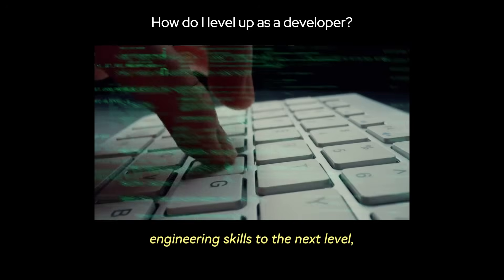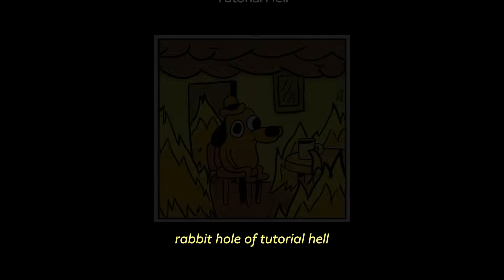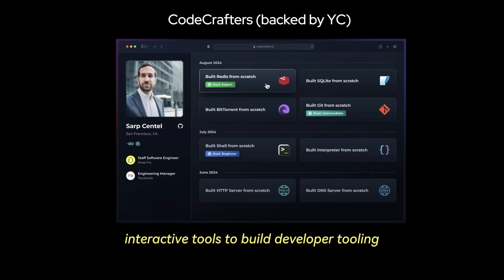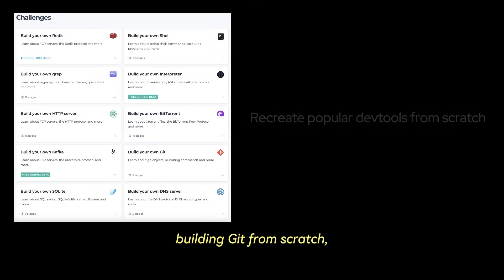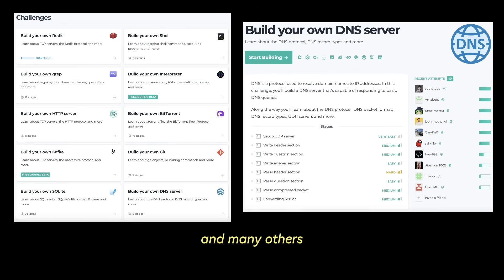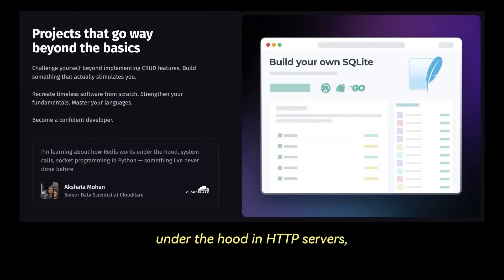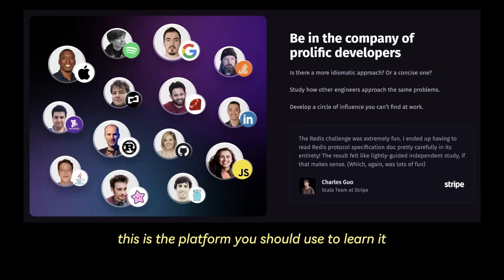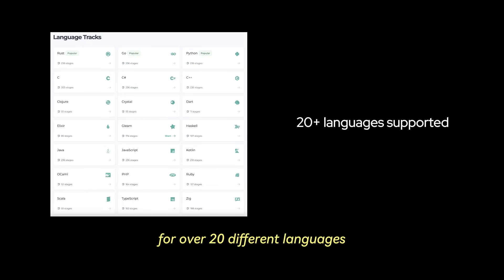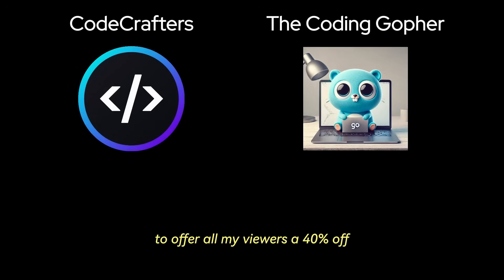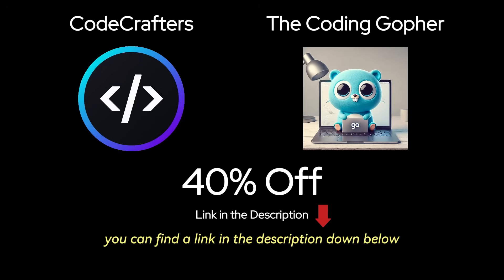If you are interested in taking your software engineering skills to the next level, I would encourage you to build projects — not going down the rabbit hole of tutorial hell building a to-do list, calculator, or weather app, but building complex, real-world projects beyond the basics. This is where CodeCrafters comes in. This platform provides interactive tools to build developer tooling from scratch, including courses on building Git, an in-memory Redis database, an HTTP web server, your own Docker, your own DNS server, and many others. I'm excited to announce I'm partnering with CodeCrafters to offer all my viewers 40% off — link in the description and pinned comment.